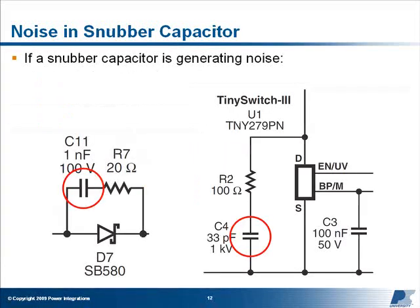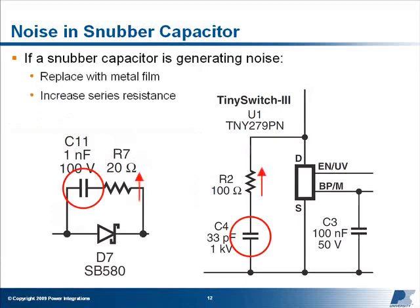If a snubber capacitor is generating noise, consider replacing it permanently with a metal film type or increasing the value of the resistor in series to reduce the dV/dt seen across the capacitor. Alternatively, switch to a ceramic capacitor with a different dielectric and see if the noise level reduces.